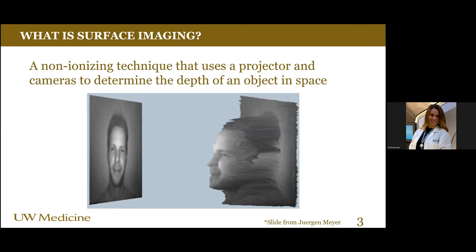What is surface imaging? It is a non-ionizing technique that uses a projector and a camera to determine the depth of an object. Surface imaging takes an image a step further than we're used to. If you look at the typical 2D image on the left, that's the kind of image a lot of us take with our phones. Surface imaging goes a step further and tells us more about the depth of an object — it can give us a topographic map or a motion map of the patient surface.